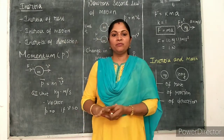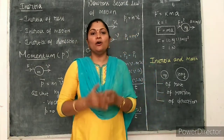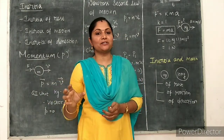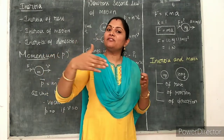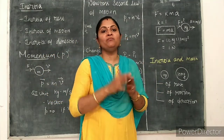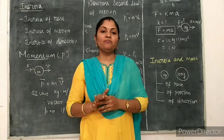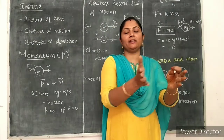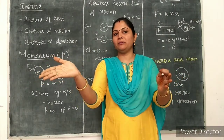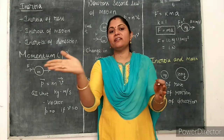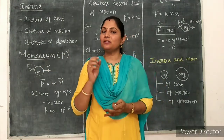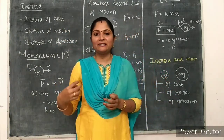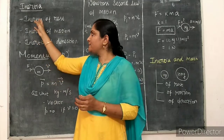Inertia of direction: in order to change the direction of motion of the body, there is an inability in the body — that is said to be inertia of direction. For example, if we travel fast and the bus takes a turn, passengers fall in the left or right direction. There is an inability to change the direction of motion. So this is said to be inertia of direction.